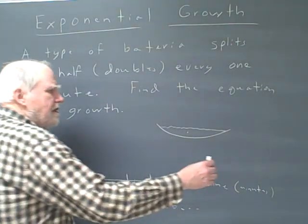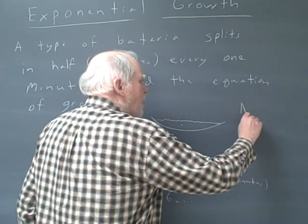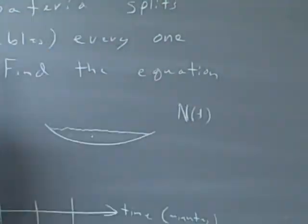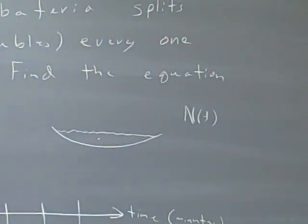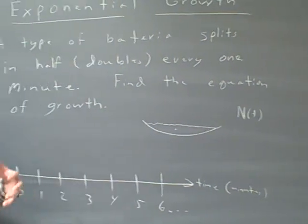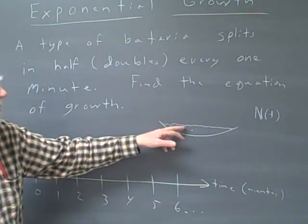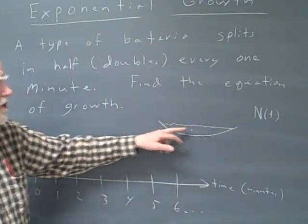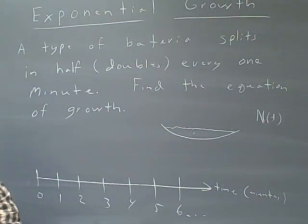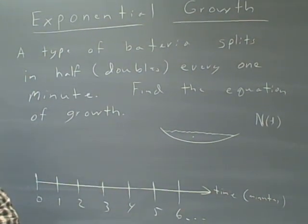What we're looking for is an equation of growth — the number at any time t. So if somebody asks how many will I have in 20 minutes, or how long will it take to get a million of these things in this petri dish, you can actually come up with that number. That's the model we're looking for.